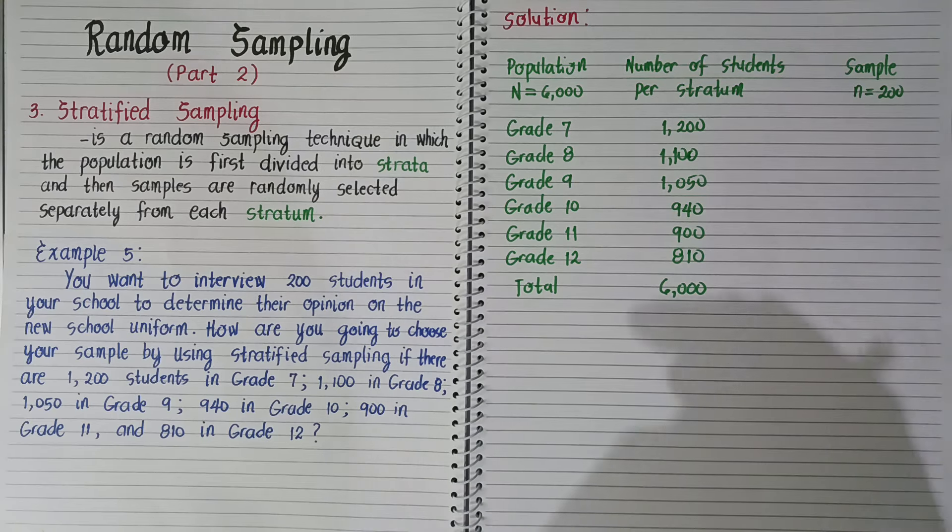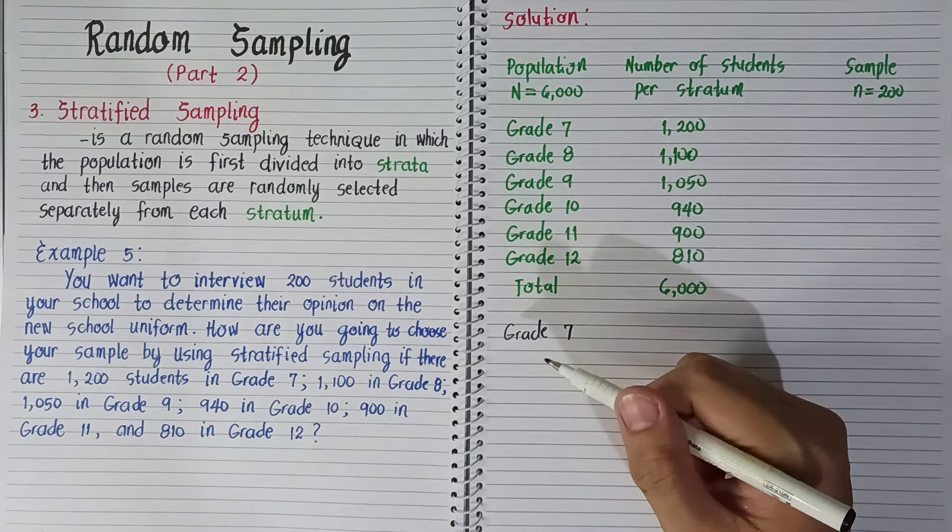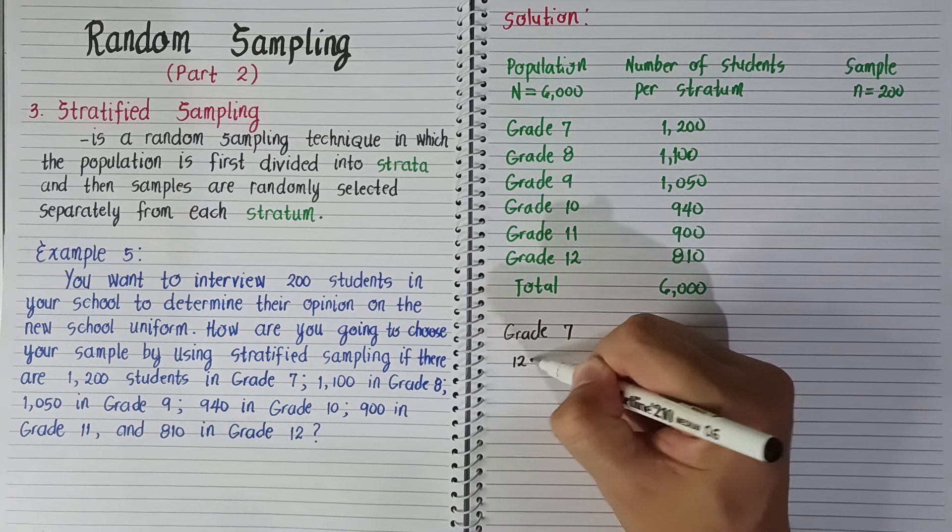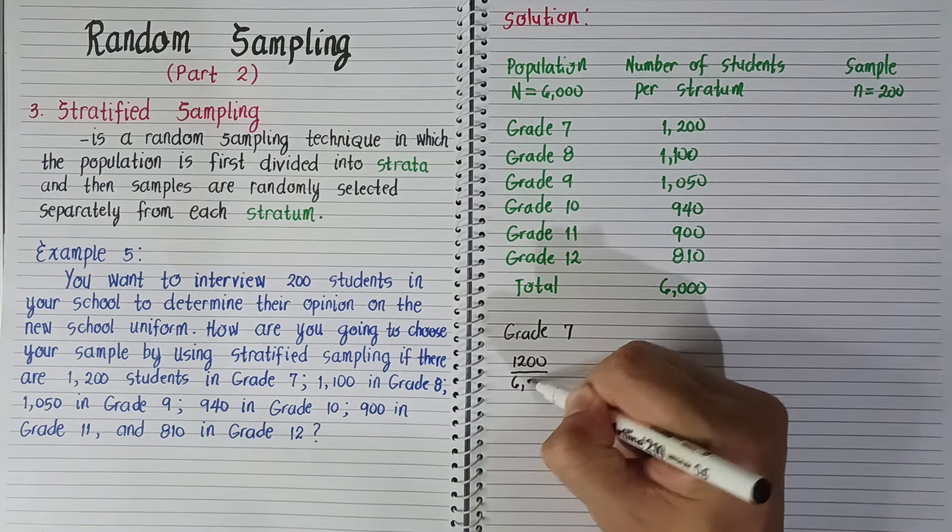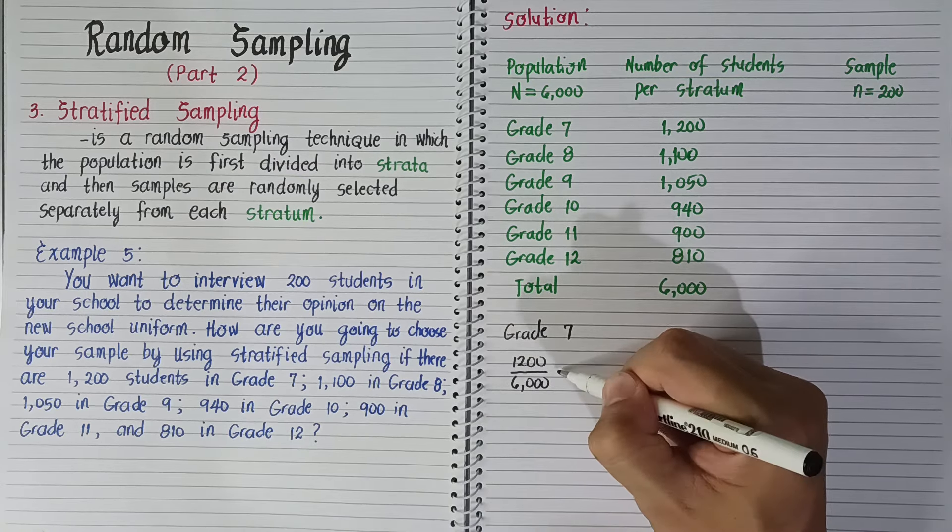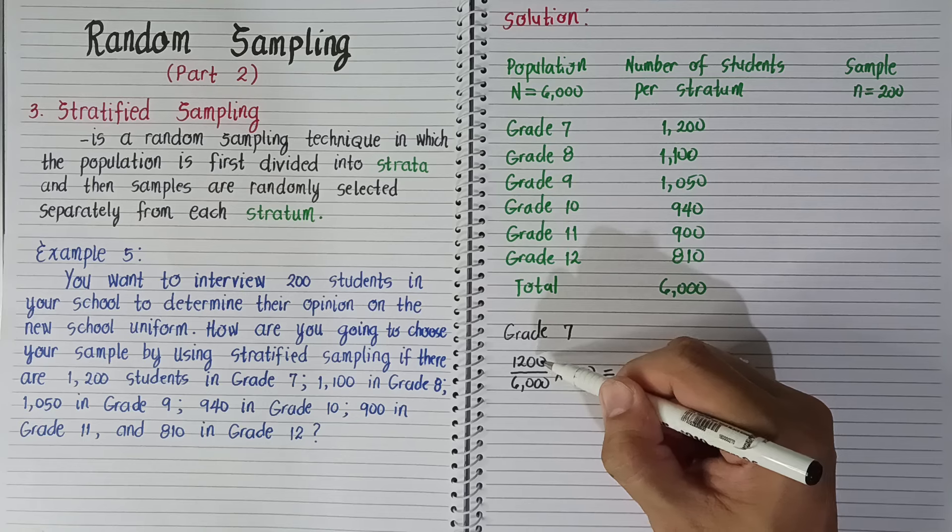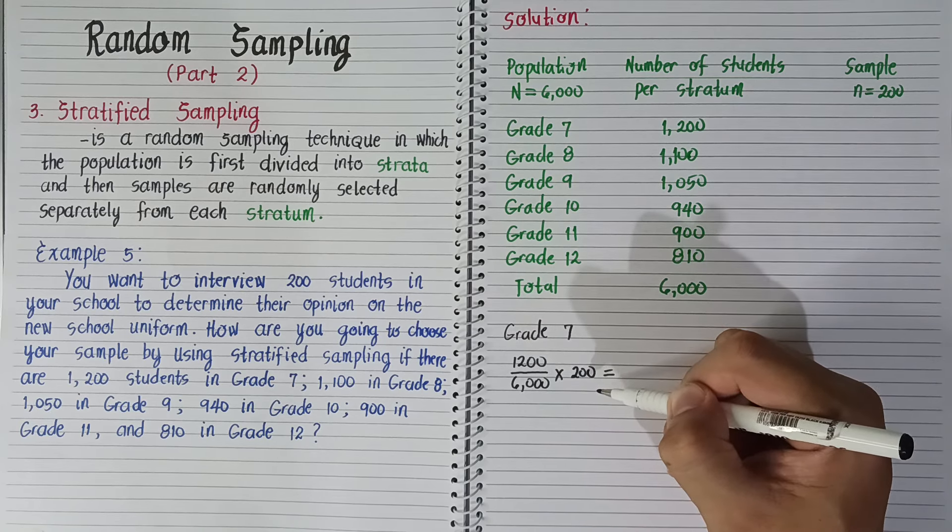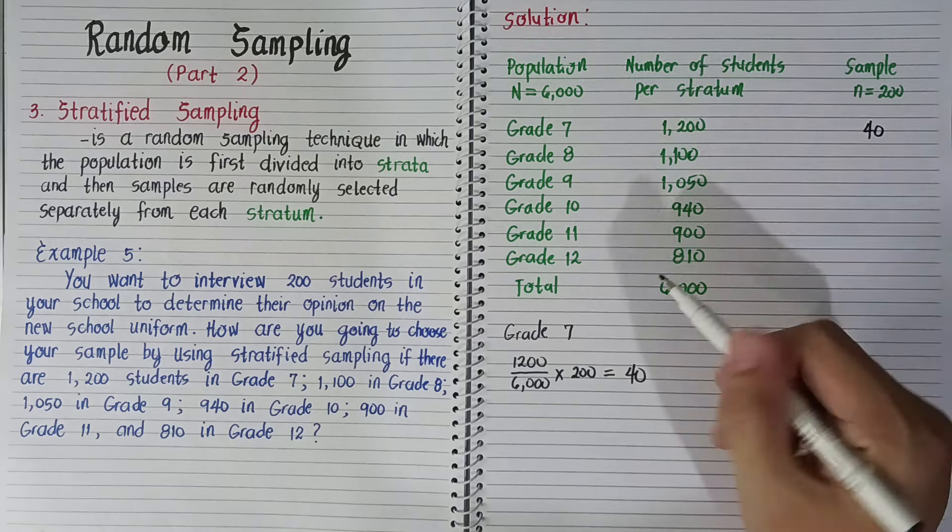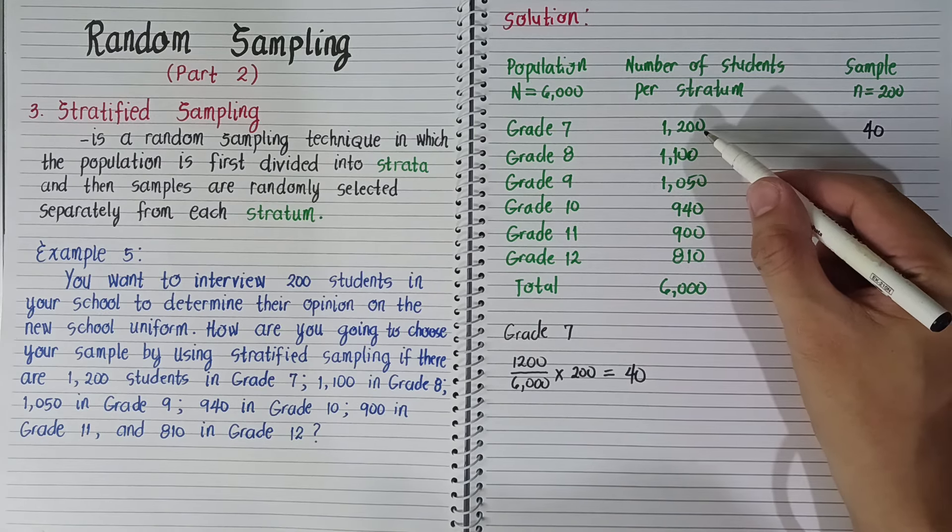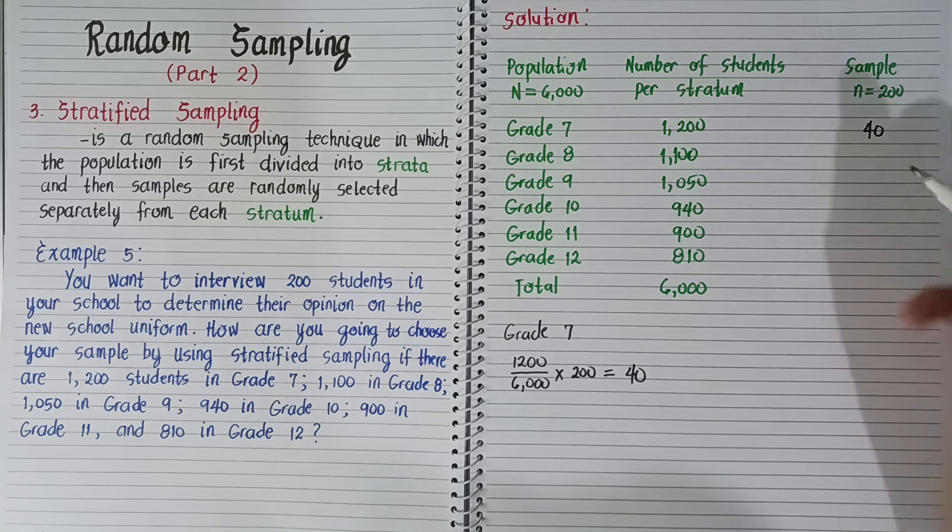How do we get that? First, for grade 7, let's show the step-by-step process. We have 1,200 divided by the total population of 6,000, then times 200. That equals 1,200 divided by 6,000 times 200, which equals 40. Since it has the largest portion, we should get the largest sample from here. This is what we discussed earlier.